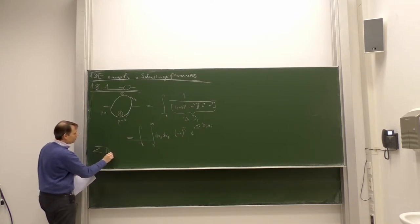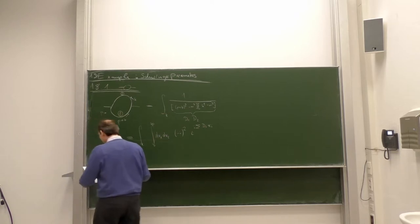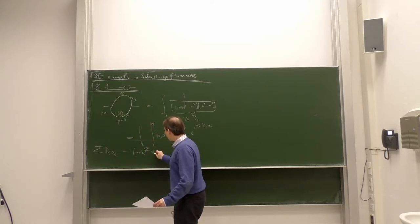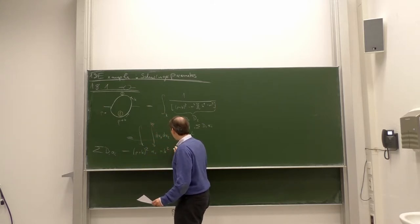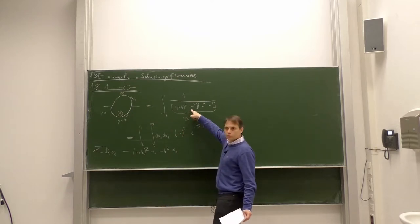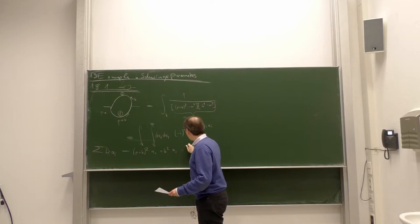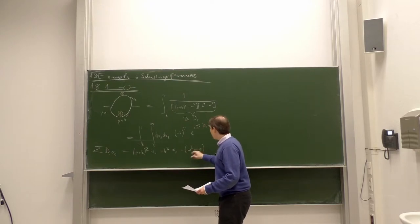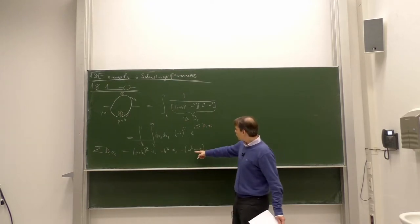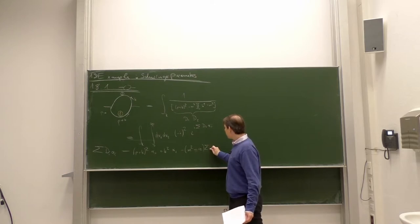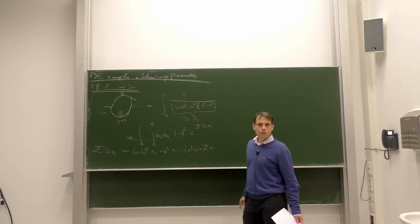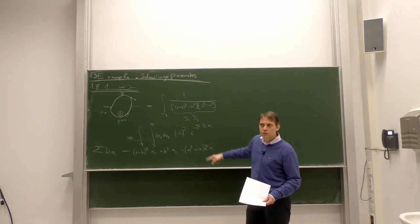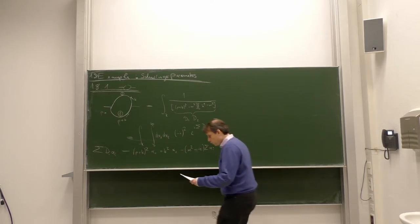So the sum dᵢ αᵢ is actually: (p+k)² times α₁ plus k² times α₂. Then for each propagator we have minus m² and plus iε. Minus times minus is plus, so for each propagator this factor comes times the sum of the two αᵢ's: minus m² times α₁ minus m² times α₂, and the same for iε.